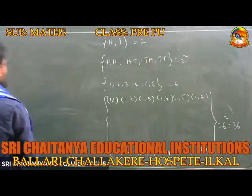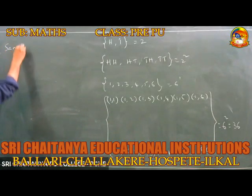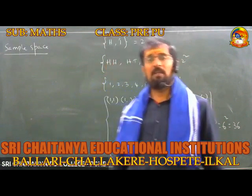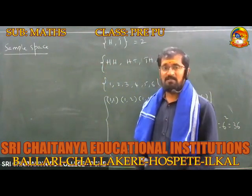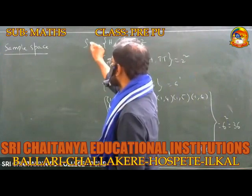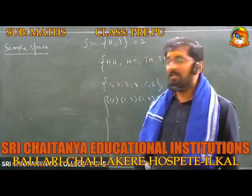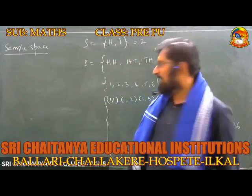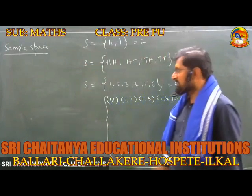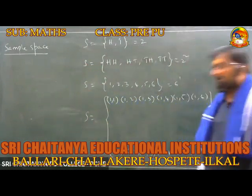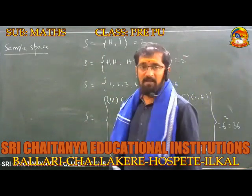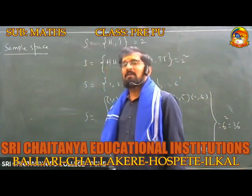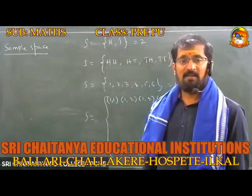The next definition is sample space. The set in which elementary events are represented is called sample space, and it is represented by the letter capital S. For example, if one coin is tossed, S equals {H, T}. The set of elementary events is said to be a sample space.